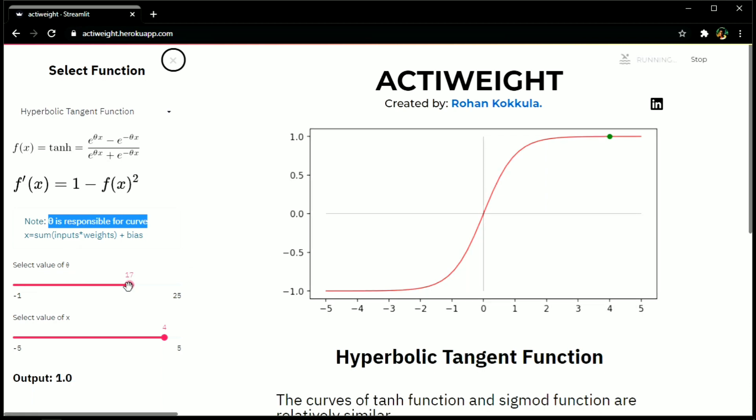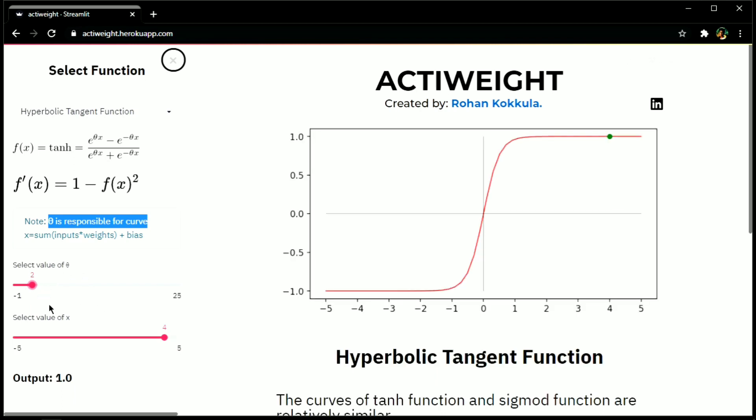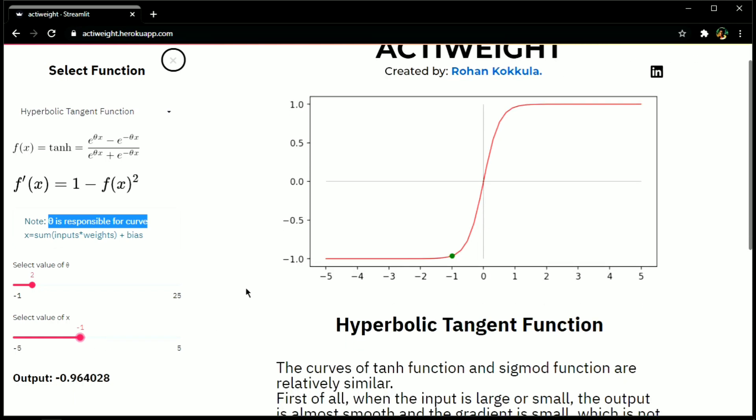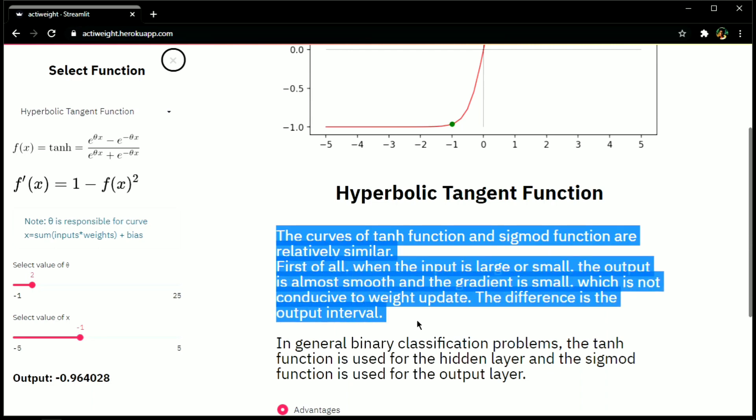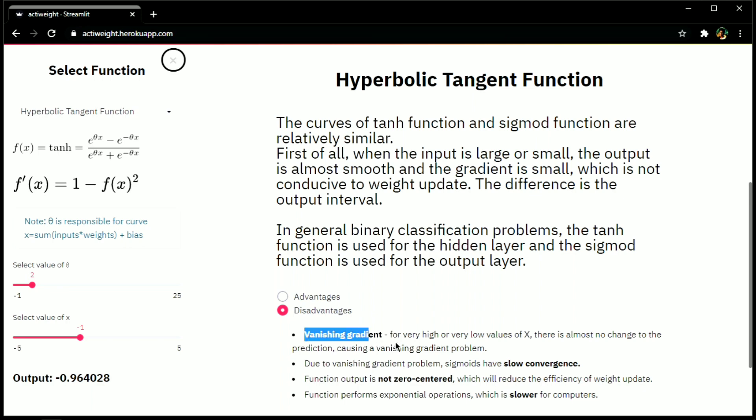Just like beta in sigmoid function, theta is responsible for the curvature. Unlike sigmoid function, range of hyperbolic tangent function is between minus 1 to plus 1. If you are working with the binary classification problem, this is the best fit. Use this in the hidden layer and sigmoid function in the output layer. Major advantages are zero-centered and being smooth gradient. The disadvantages are vanishing gradient, slow convergence and slower computation due to the exponential calculations.